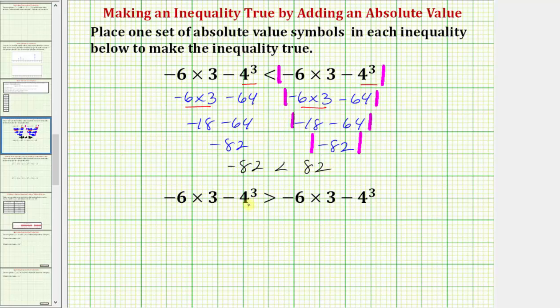Now for the second inequality, the only difference is we now have a greater than symbol here. So now we want the right side to be greater than the left side. And again, these are the same expressions, which simplify to negative eighty-two. So if we want the right side to be greater now, we can just include the right side in a set of absolute value symbols. Notice by doing this, when simplifying we'd have positive eighty-two is greater than negative eighty-two, which is true.